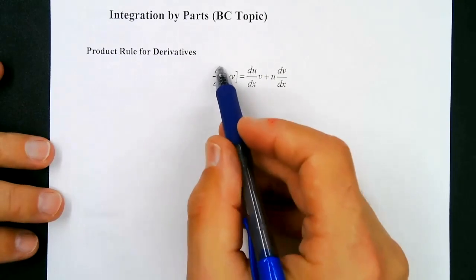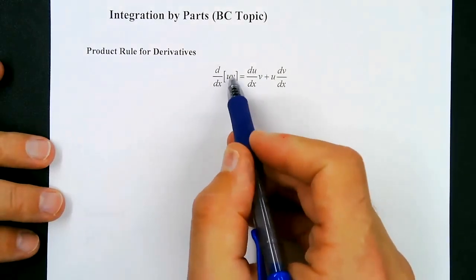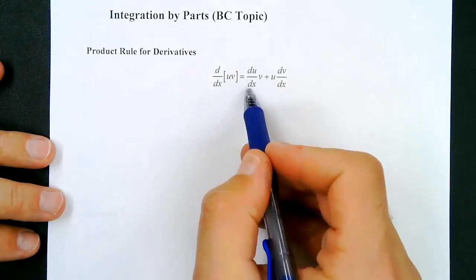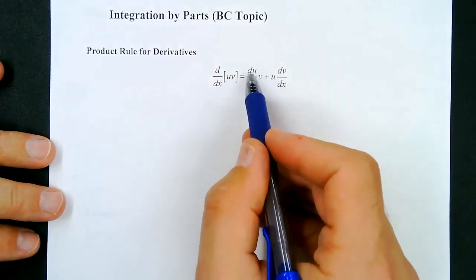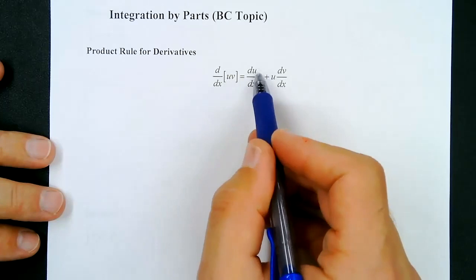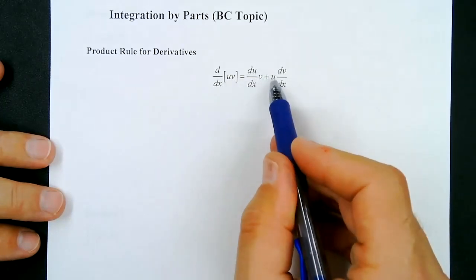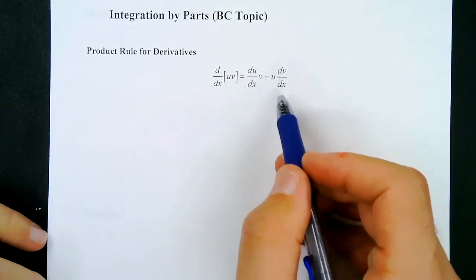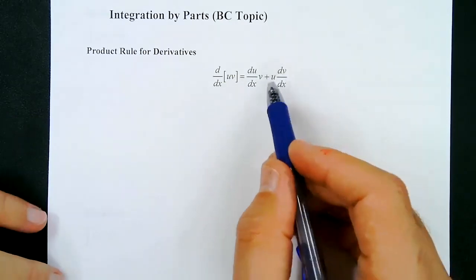If we take the derivative with respect to x of two things being multiplied together, like u and v, then it's the derivative of the first thing — the derivative of u with respect to x — times the second, v, and then plus the first times the derivative of the second, dv over dx.